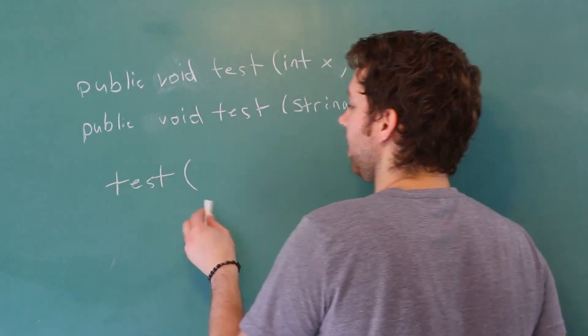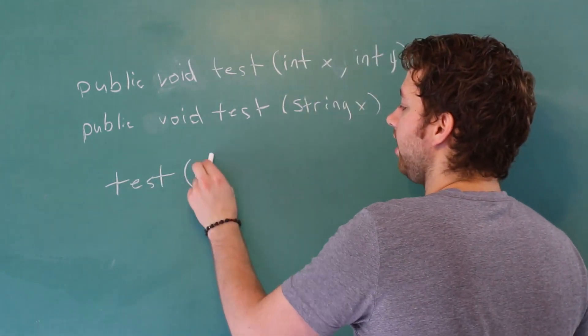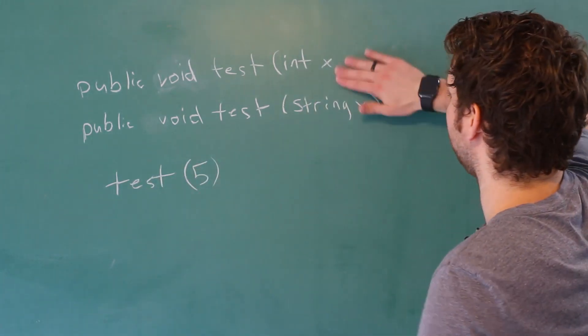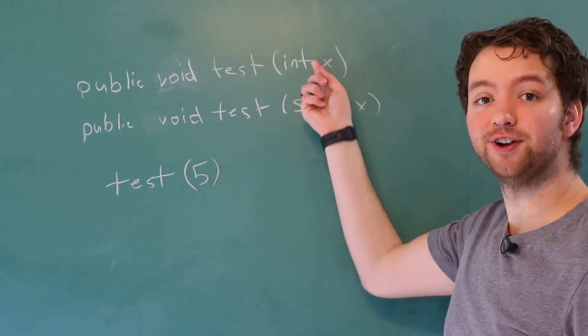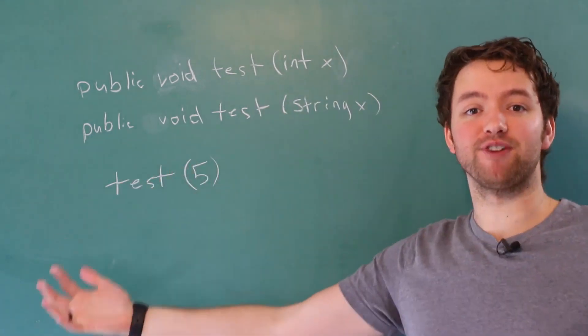So for example we could say test, pass in a 5, and that's going to call this version because it matches. A 5 is an integer, this one takes an integer, it's a perfect pair.